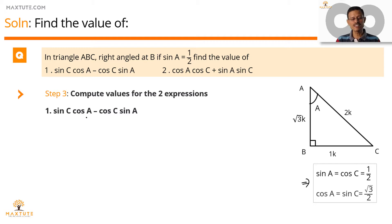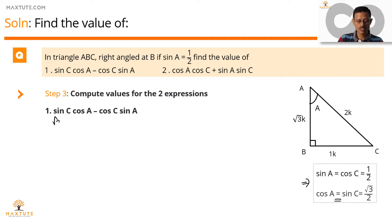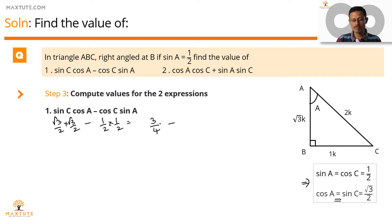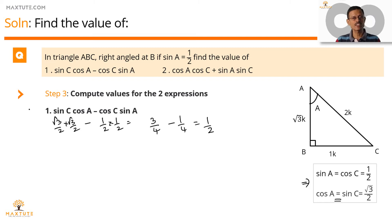The first expression is sin C·cos A minus cos C·sin A. Sin C and cos A are both equal to root 3 by 2, so that gives root 3 by 2 times root 3 by 2. Cos C and sin A both measure half, so we subtract half times half. Root 3 times root 3 is 3, and 2 times 2 is 4, giving 3 by 4 minus 1 by 4, which equals 1 by 2.